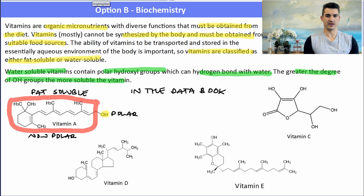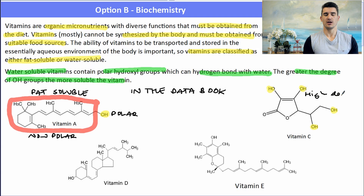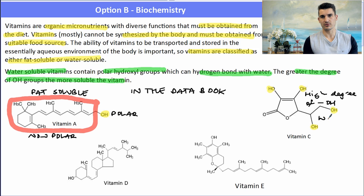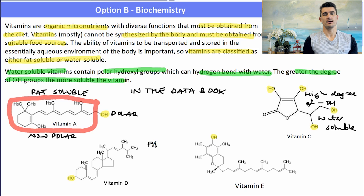Looking at vitamin C, we can see that it has a larger degree of hydroxy groups — it has four hydroxy groups, so this is a much more polar molecule. Because it has a high degree of hydroxyl groups, it can form a large number of hydrogen bonds with water, which makes it soluble, and vitamin C can be passed around in the blood. Vitamin D has a backbone that looks a bit like a steroid or a cholesterol backbone, but it has one polar hydroxy group, which means it is a fat-soluble vitamin.